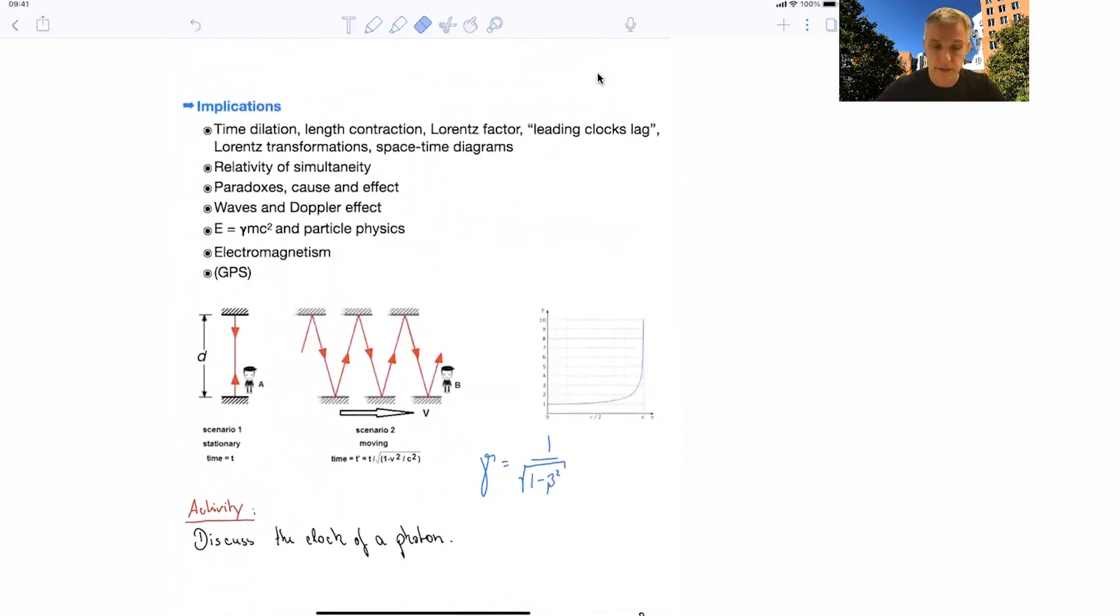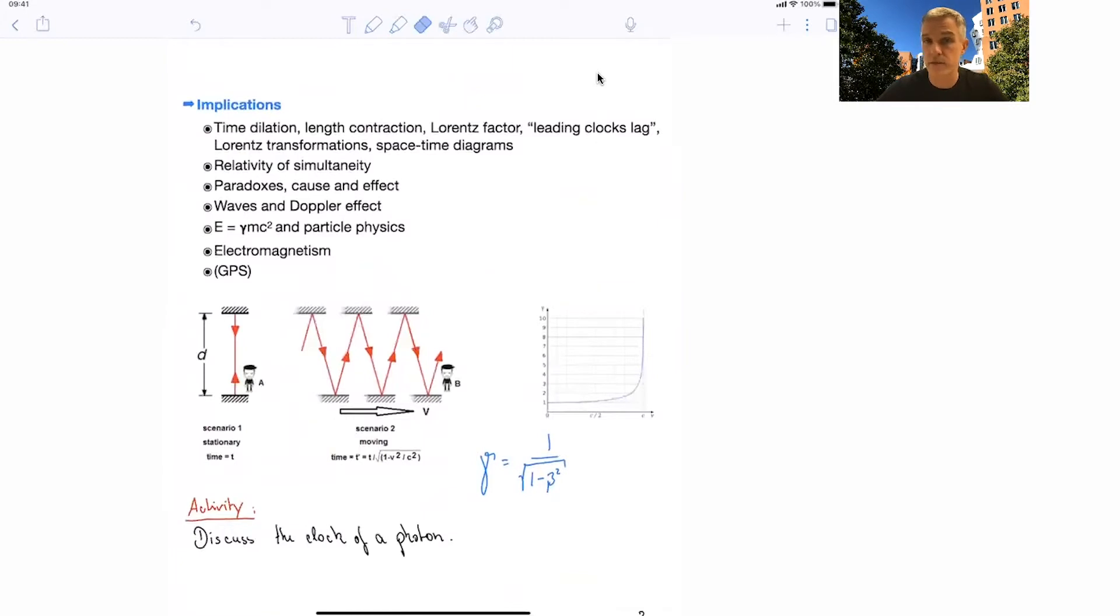So we looked at the implications. The implications started from time dilation, length contractions. We were able to derive the Lorentz factor and Lorentz transformation. And we did this by showing this light clock here, where you observe a ticking clock in which there's two mirrors and light's bouncing back. And each time there is a bounce, we count this as one tick of the clock. So if the clock is moving, the light has to travel a longer distance. And hence, time is delayed. And from just the geometry of this problem, we were able to derive this gamma factor here: 1 over square root 1 minus beta squared. The beta is velocity over the speed of light.